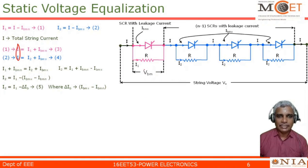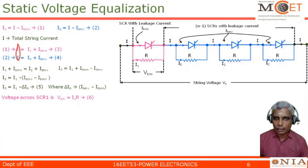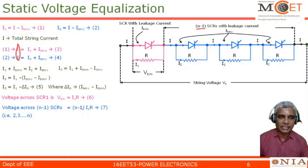The voltage across SCR1 is VBMN, which equals I1 into R (since I1 is the current through resistor R). So VBMN equals I1 times R — equation 6. Similarly, the voltage across each of the remaining n minus 1 SCRs is I2 times R, so the total voltage across those n minus 1 SCRs is (n minus 1) times I2 times R — equation 7.